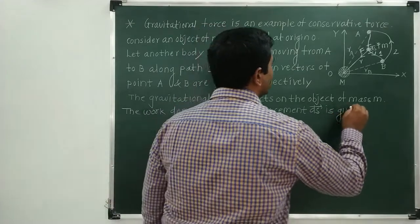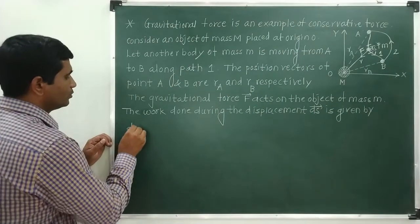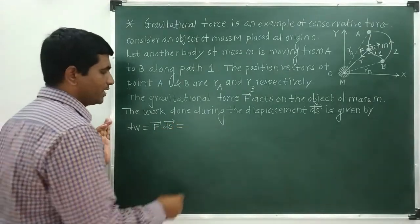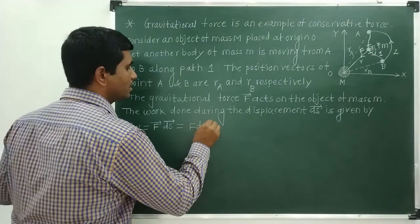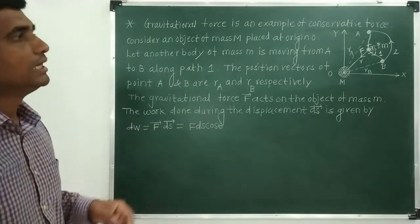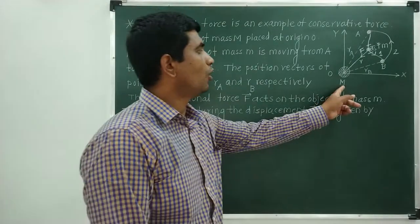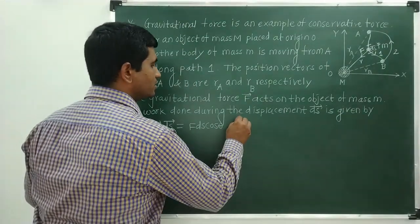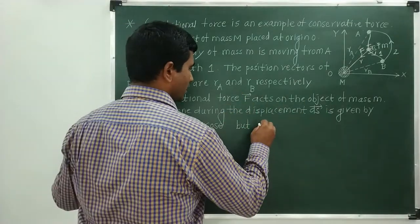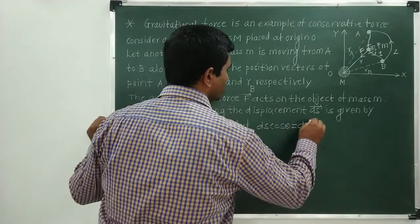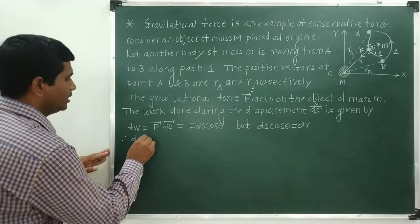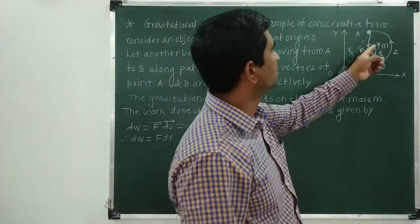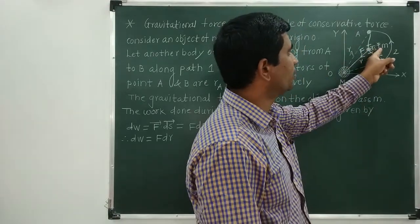The work done is given by dW = F⃗ · ds⃗. If the displacement and force make an angle θ, then F⃗ · ds⃗ = F·ds·cosθ, where θ is the angle between the displacement and the force. The force acts towards the object of mass M. Now, ds·cosθ represents the projection along the force direction, so ds·cosθ = dr. Therefore we can rewrite dW = F·dr.